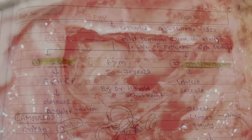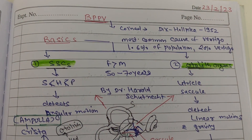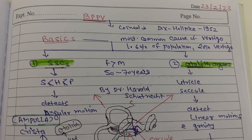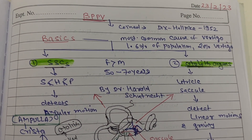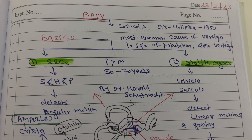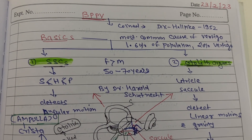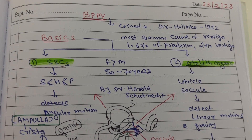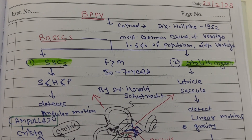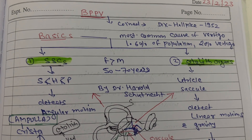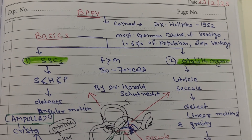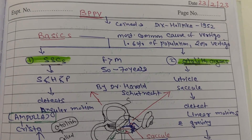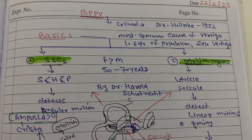Now, some background on what is BPPV. BPPV is the most common cause of vertigo, found in about 1.6% of the population, more commonly in females than males, and commonly in the age group of 50 to 70 years.